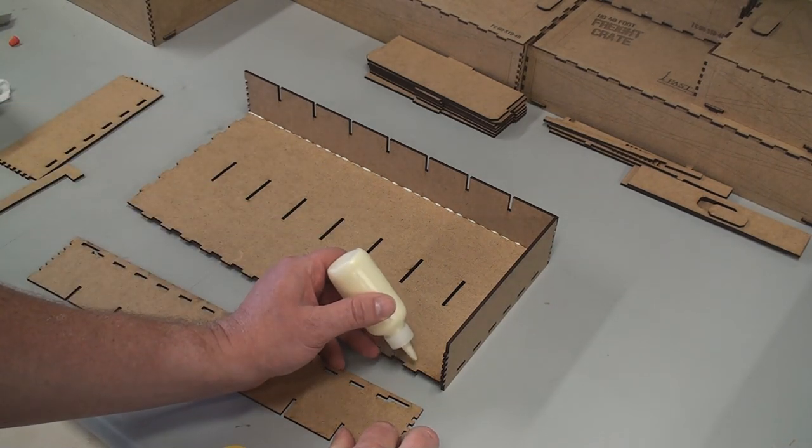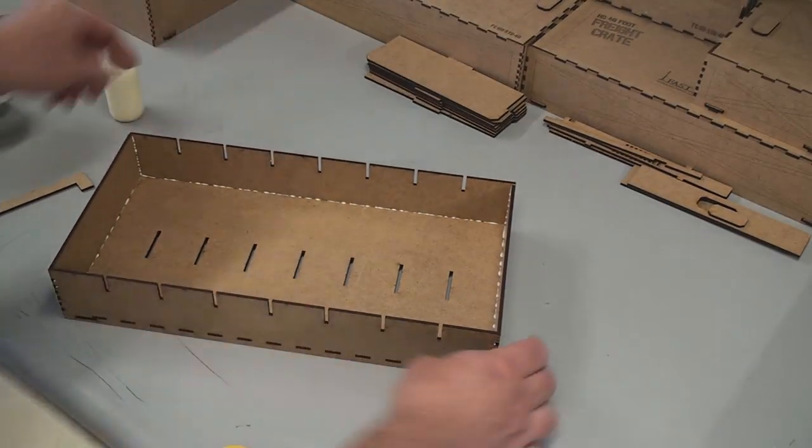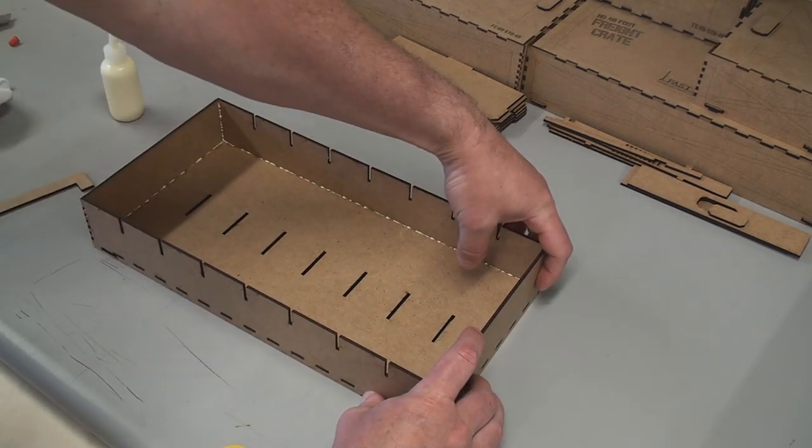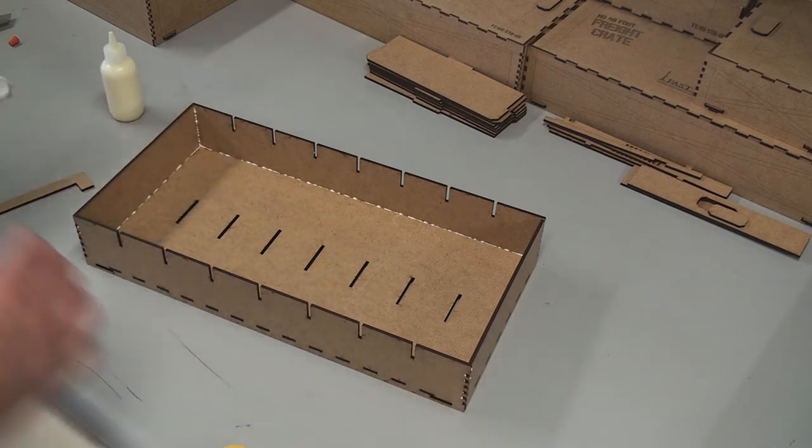So now, some glue on here and glue the other two sides on like so. Okay, now I'm just putting a little pressure on all the corners. Make sure everything sets up quick. And now we'll go in here and clean this out.